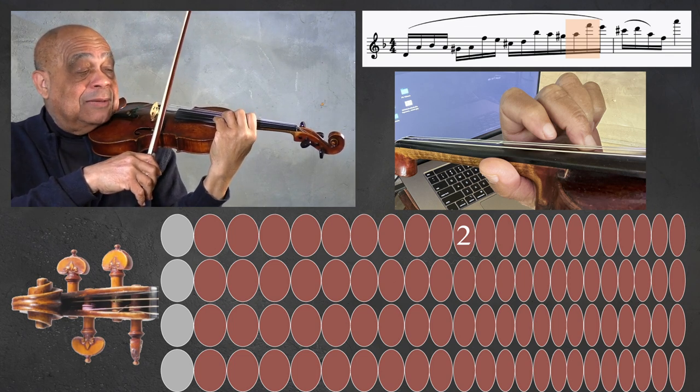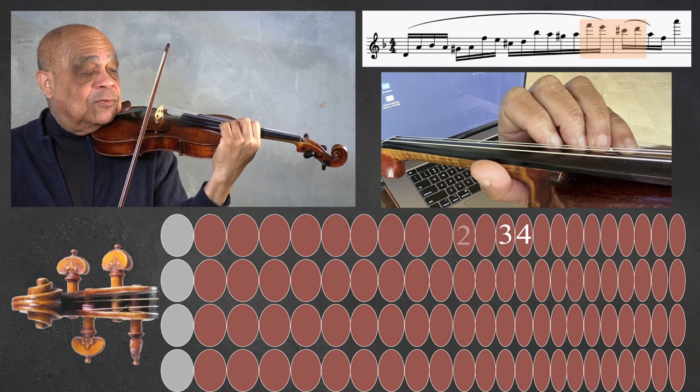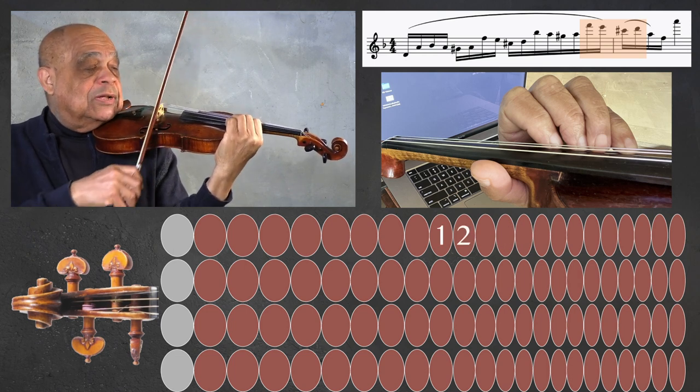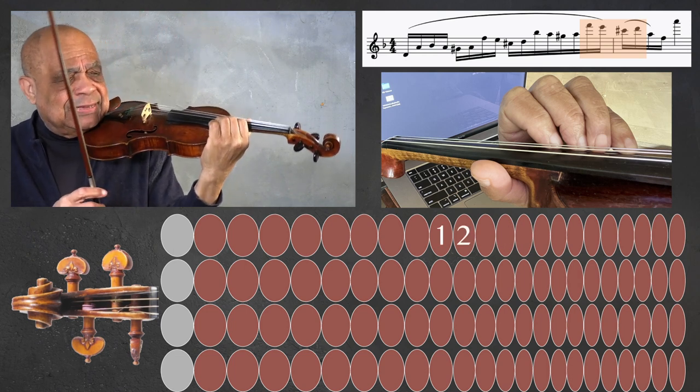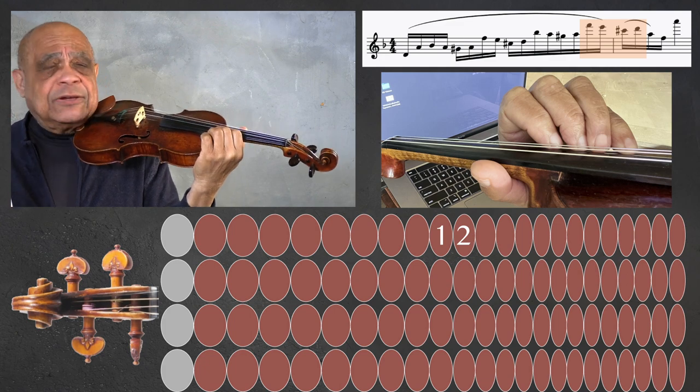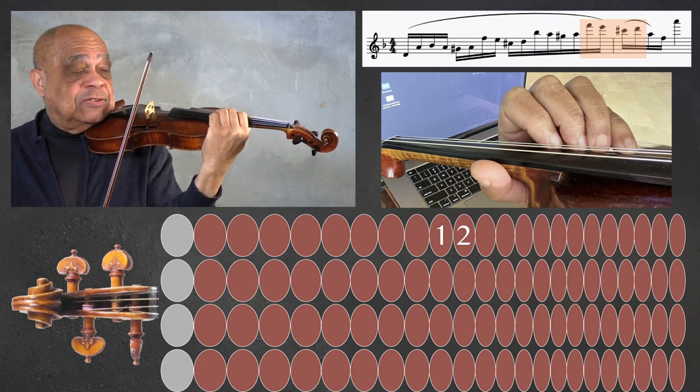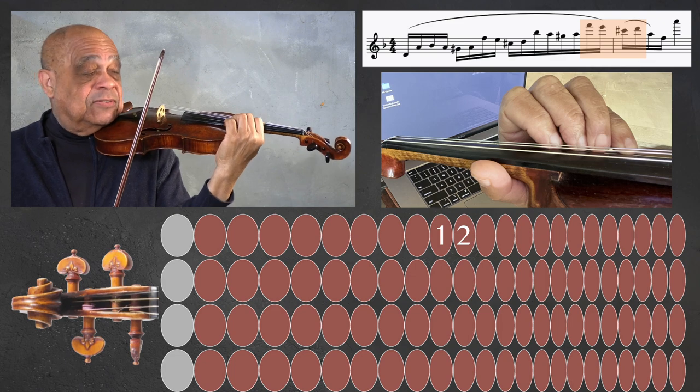And we end up with four, three, one, two. So that second finger sort of acting like an anchor because I can find my first finger C sharp from that second finger.